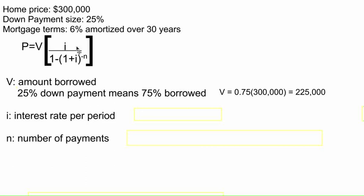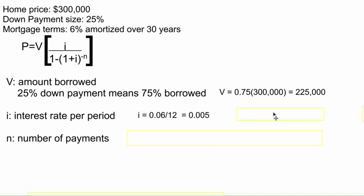The interest rate per period is not 0.06 — that's the interest rate per year, but we're not paying for this house once a year, we're paying once a month. So we're going to calculate our interest rate monthly, which is 0.06 divided by 12, and that gives us 0.005. Every monthly payment, this is the interest rate we're going to use, and we'll see that in the amortization schedule in the next video.